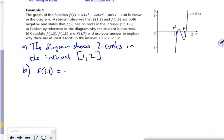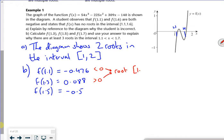if you do f of 1.1, it gives you minus 0.476. If you do f of 1.3, it gives you 0.088. If you do f of 1.5, we've got minus 1.5. So this one, so I've got a less than 0 and a greater than 0 here. So between these two, there's a root in the interval between 1.1 and 1.3. This one's less than 0, so there's a root in that interval between 1.3 and 1.5.